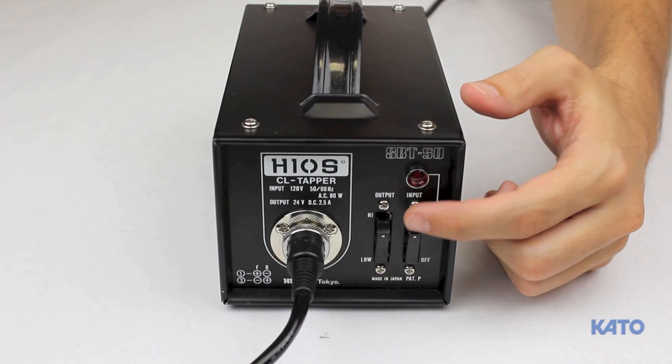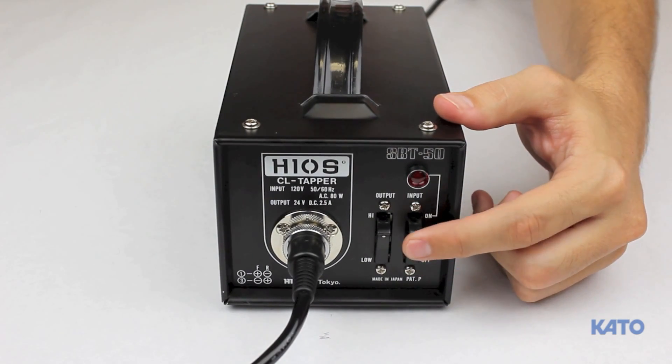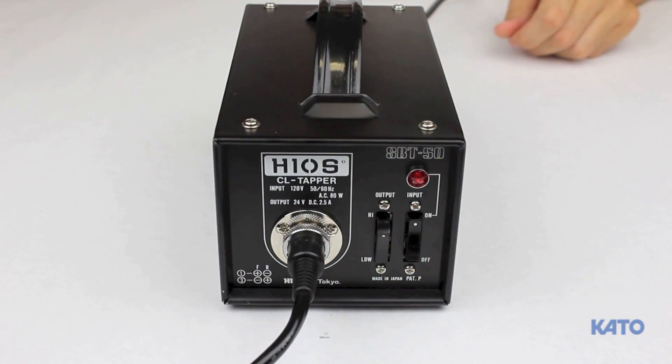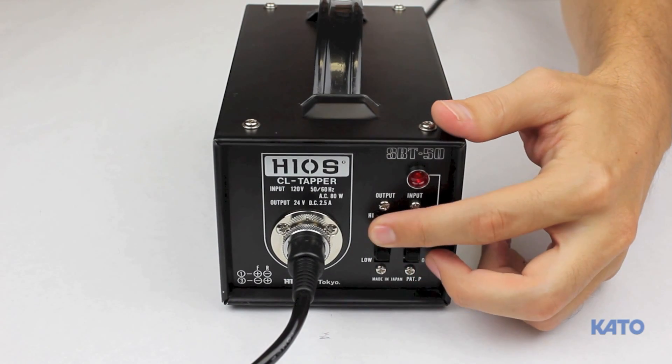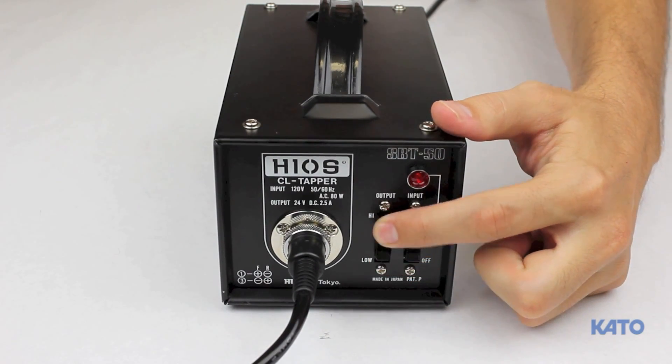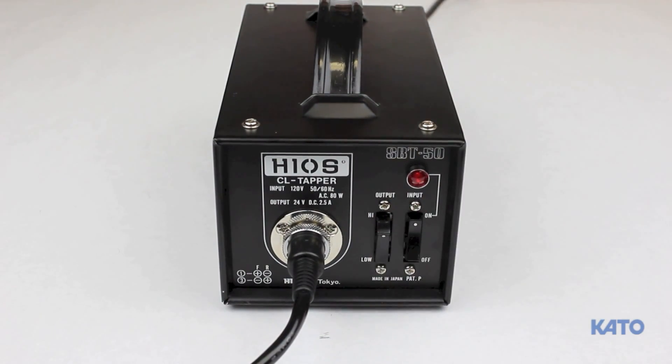To the right there is an on-off switch with a light indicator just above it. Next to that you'll find the high-low switch. Please note that for all installation of coil thread inserts always use the low setting.